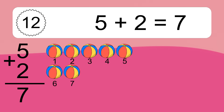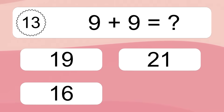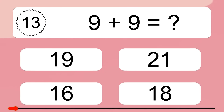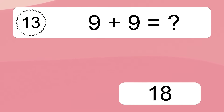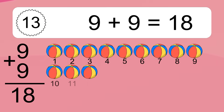Let's count it: 1, 2, 3, 4, 5, 6, 7. Then: 1, 2, 3, 4, 5, 6, 7, 8, 9, 10, 11, 12, 13, 14, 15, 16, 17, 18.